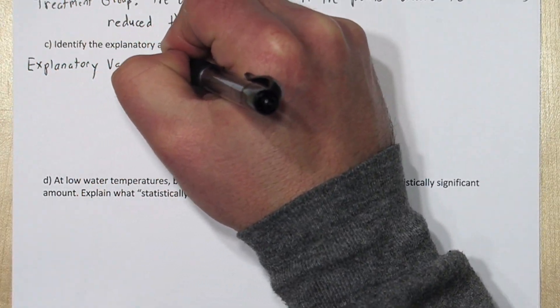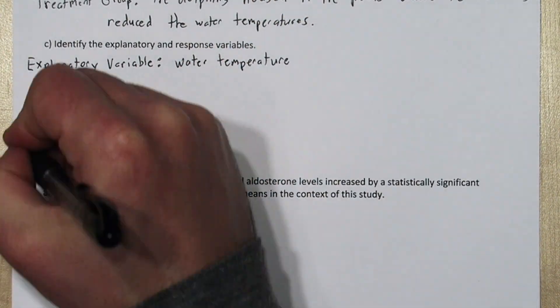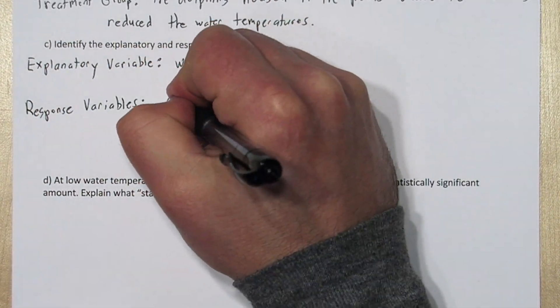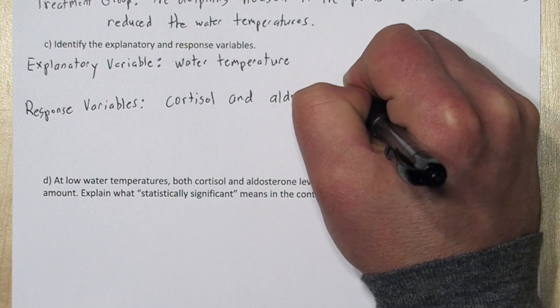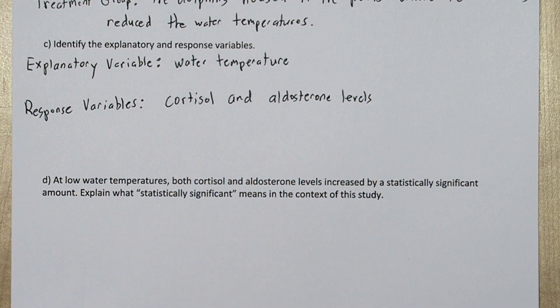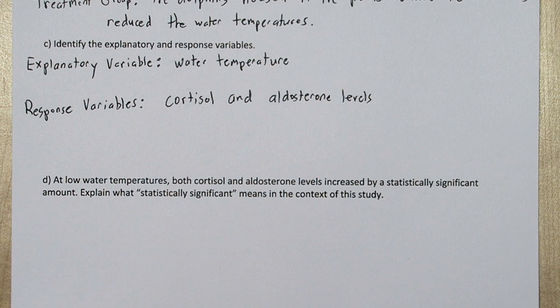The explanatory variable is the water temperature. The response variables are the cortisol and aldosterone levels. We know this because the explanatory variable is applied or altered to the treatment group. The response variable is what is measured and compared between the treatment and control groups.